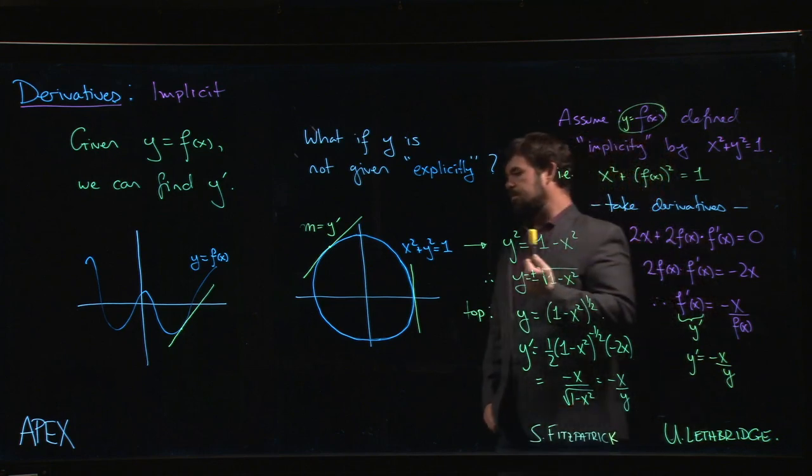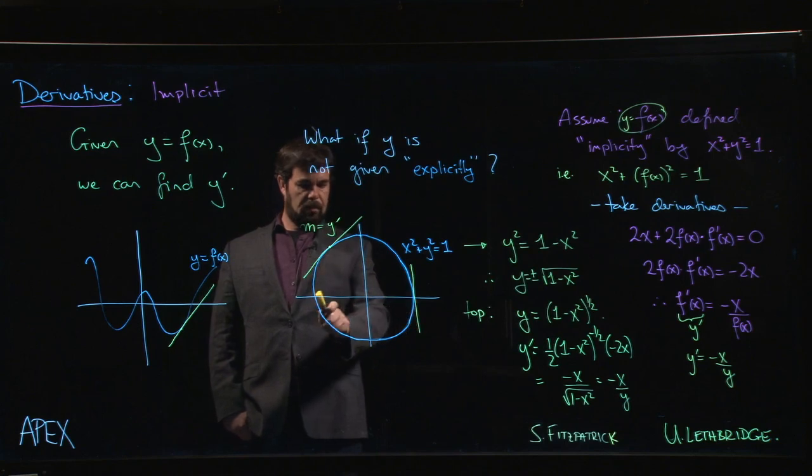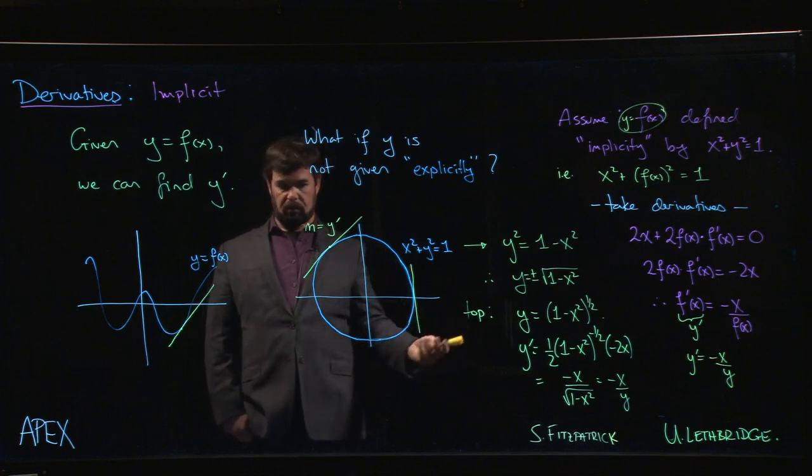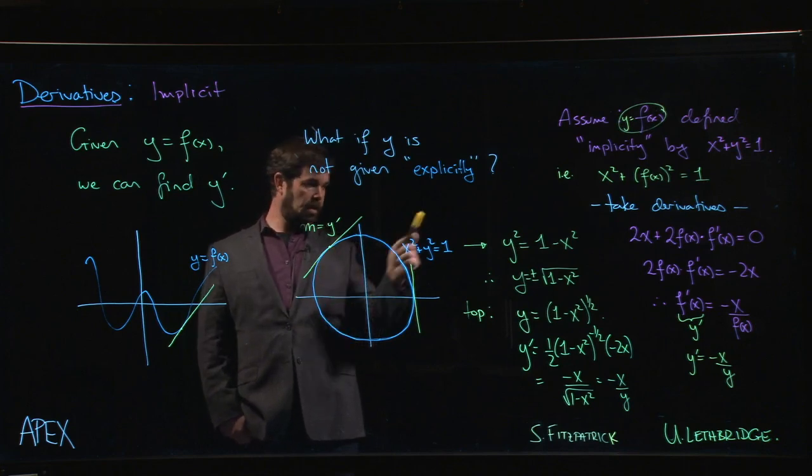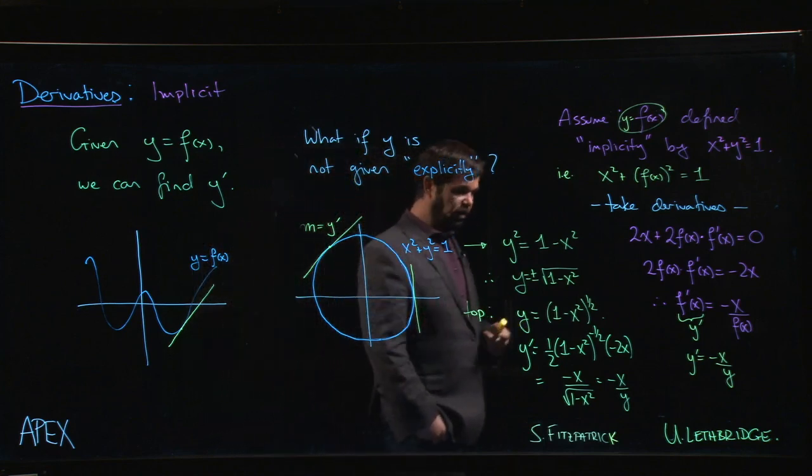We can see that it's not defined when y is equal to zero. That makes sense actually, because y equals zero on the curve—that's the location of the two vertical tangent lines, the two places where the slope is undefined, where y prime is undefined. At any other point on the circle I can find the x and y coordinates for that point, plug them into this expression, and I will know the slope of the tangent line at that point.